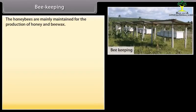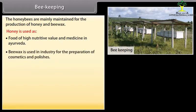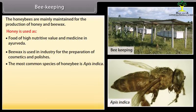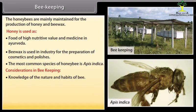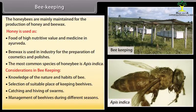Beekeeping: Honeybees are mainly maintained for the production of honey and beeswax. Honey is used as a food of high nutritive value and as medicine in Ayurveda. Beeswax is used in industry for the preparation of cosmetics and polishes. The most common species of honey bee is Apis indica. Considerations in beekeeping include knowledge of the nature and habits of bees, selection of suitable locations for beehives, catching and hiving of swarms, management of beehives during different seasons, and handling and collection of honey and beeswax.